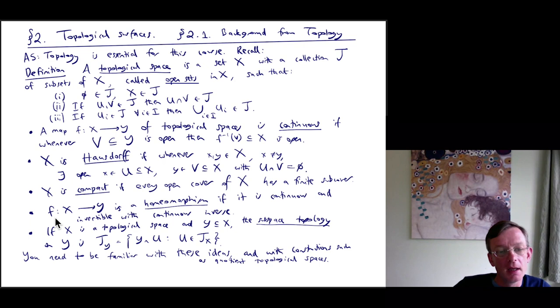A topological space X is called compact if every open cover of X has a finite subcover. So being compact kind of means that there aren't any infinite ends.